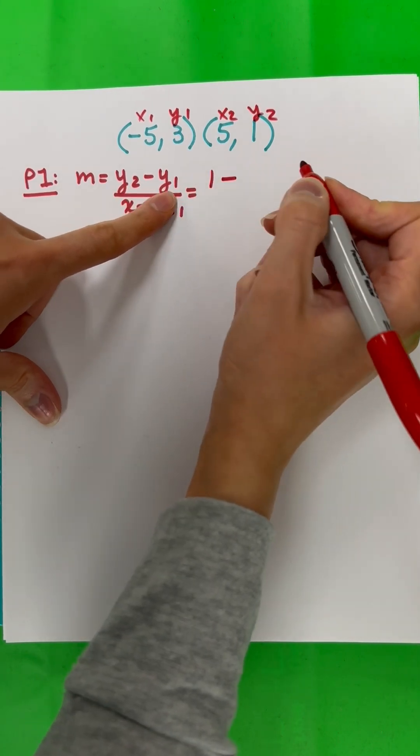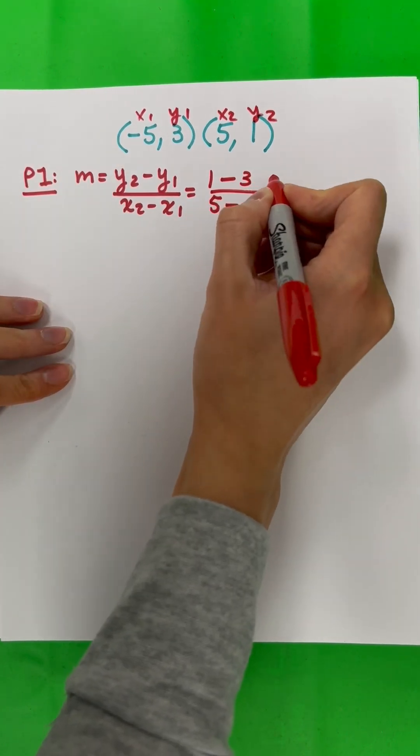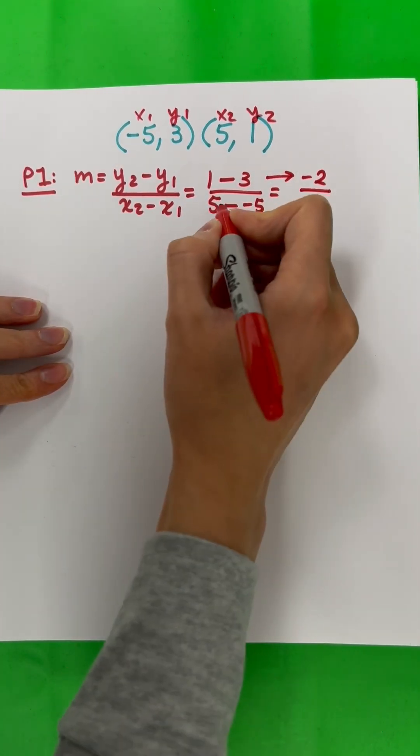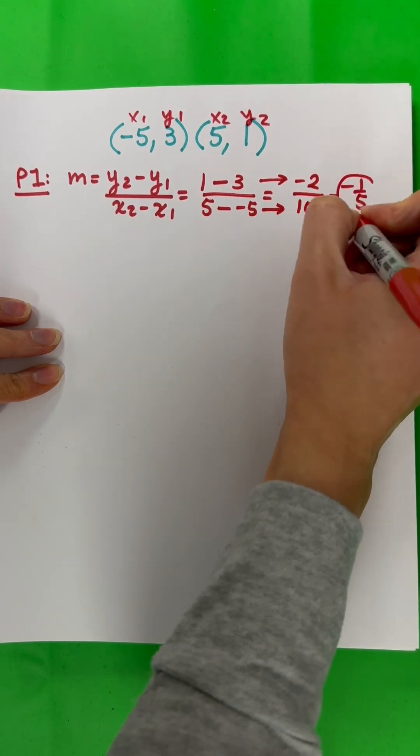Y2 is 1 minus Y1 is 3, divided by X2 is 5 minus X1 is negative 5. 1 minus 3 is negative 2, divided by 5 minus negative 5 is 10. Negative 2 divided by 10 is negative 1 fifth. This is your M.